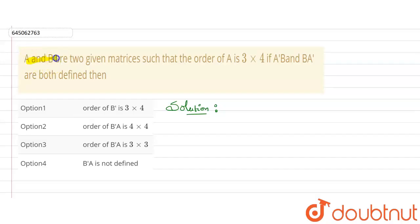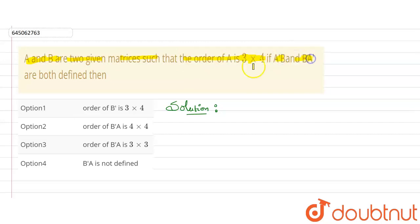In this question, it is given that A and B are two matrices such that the order of A is 3×4. It is also given that A'B and BA' are both defined. We need to find which of the four given options is correct.